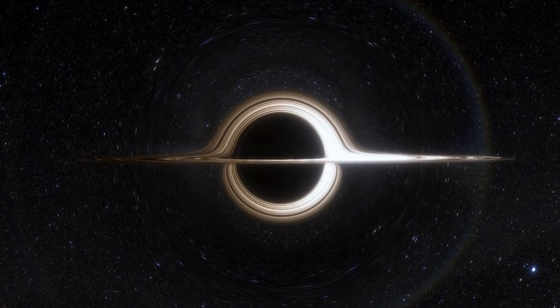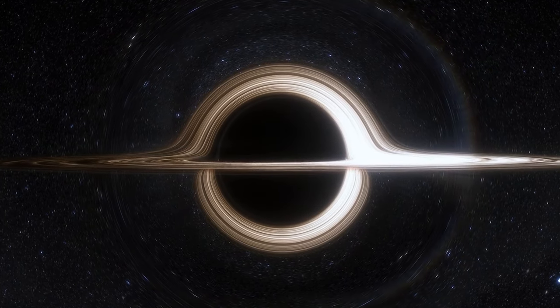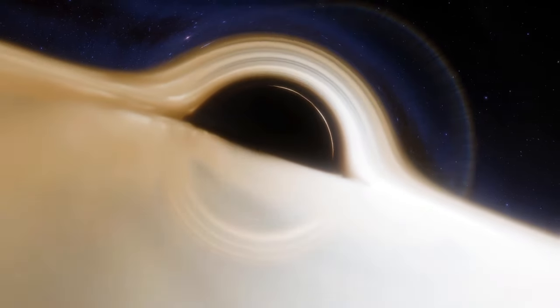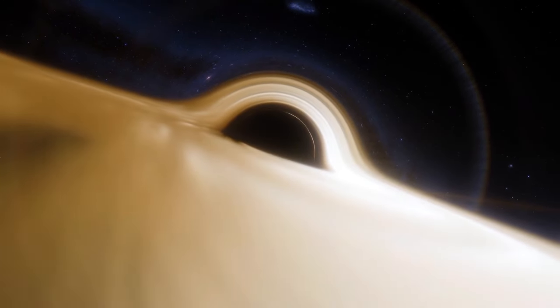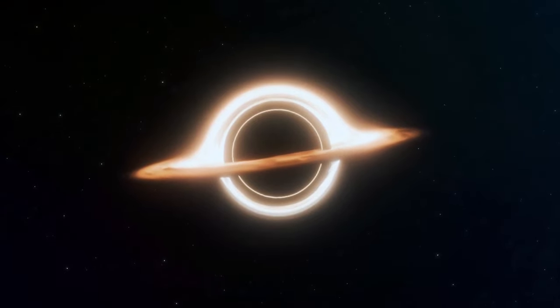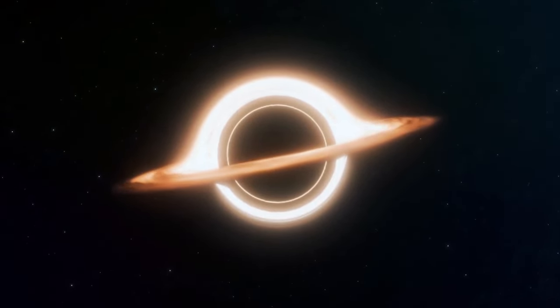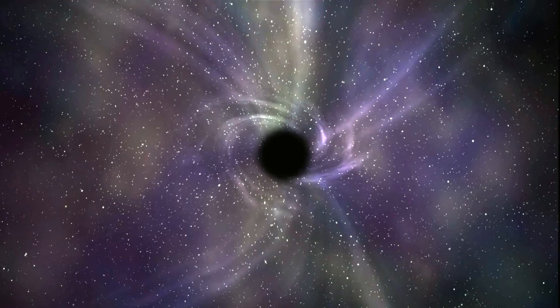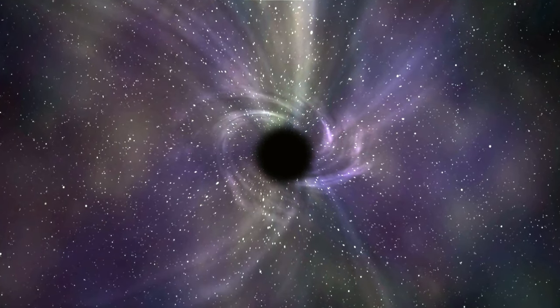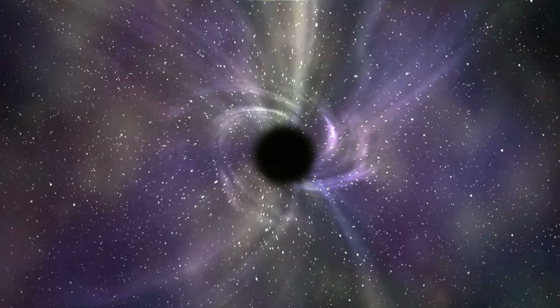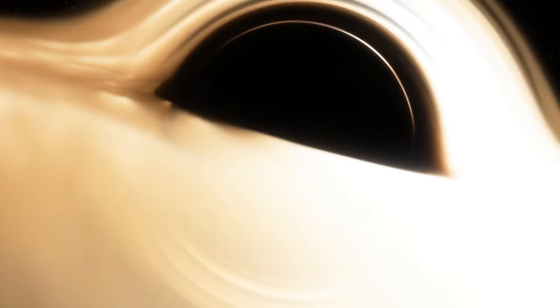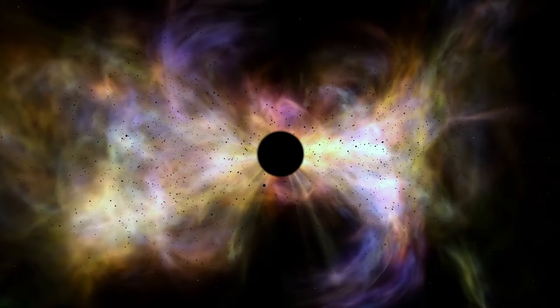The critical feature of a black hole is its event horizon, which serves as a boundary separating the universe inside it from the universe outside. Any object outside the event horizon will experience the gravitational influence of the black hole, but can escape if it moves with sufficient speed or acceleration. However, once an object crosses the event horizon and ventures into the interior, it is irrevocably destined to fall into the black hole's central singularity, adding to the black hole's mass.